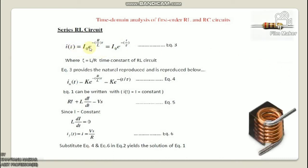Now, I(t) = I₀·e^(−R/L·t) = I₀·e^(−t/τ), which is equation 3. Here tau (τ) equals L/R, which is the time constant of the RL circuit. Equation 3 provides the natural response: I_N(t) = K·e^(−R/L·t) = K·e^(−t/τ), which is equation 4.